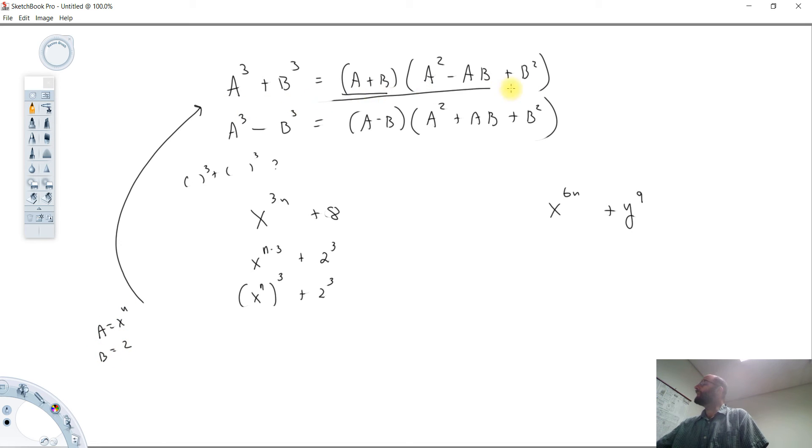And then we just put these values in. So this is going to factor into, right, the a plus b term is going to be x to the n plus 2. And then a squared is going to be x to the n squared. You can write that x to the 2n,